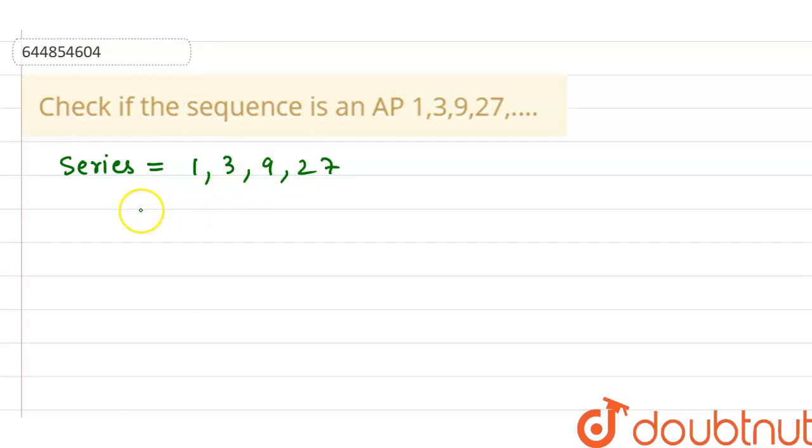We are further simplifying it. So a₁ = 1, a₂ = 3, a₃ = 9 and a₄ = 27. So in AP there is a concept which